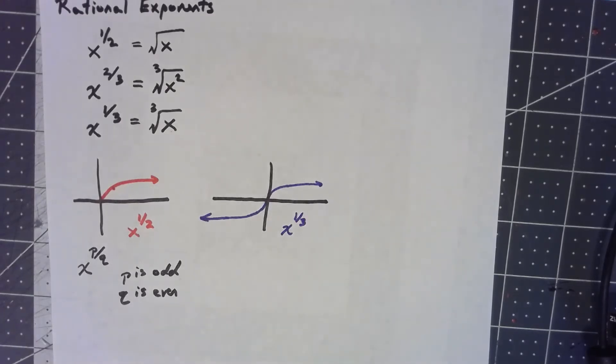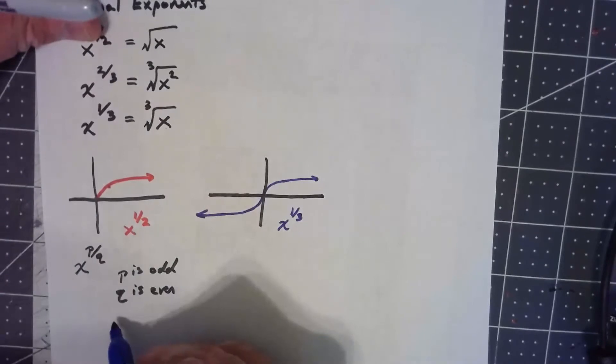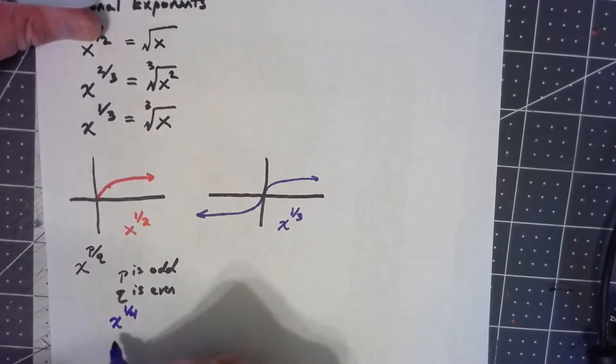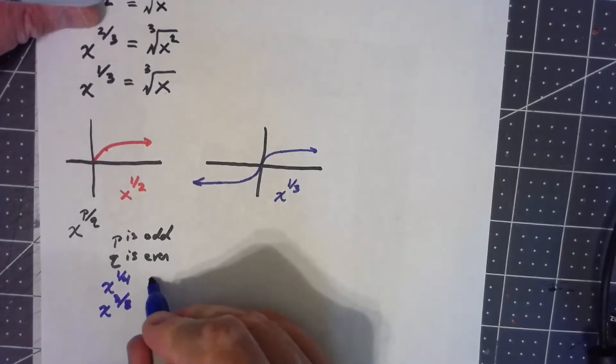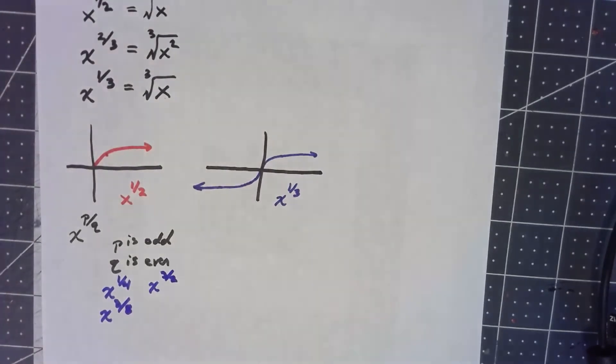So just throwing out a few: x to the 1/4 is pretty much going to look like that, x to the 3/8 is going to look like that, x to the 3/2 is going to look like that. Anytime the top of the fraction is odd and the bottom is even.